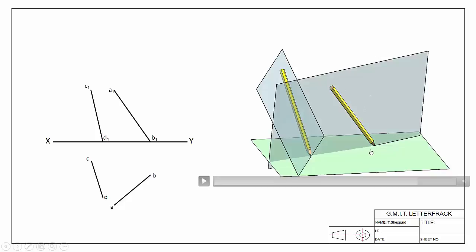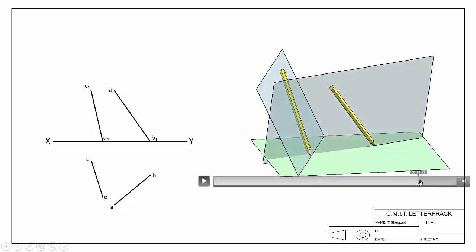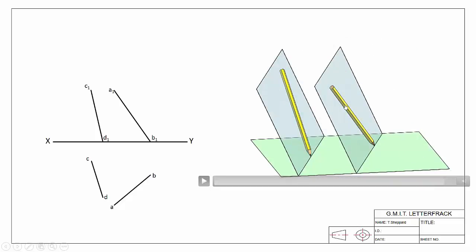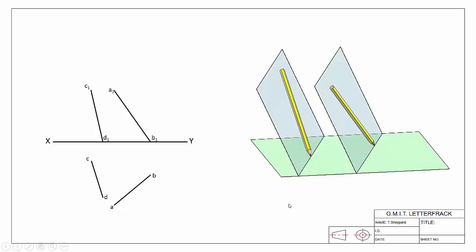So there's only one possible position that our plane can be in where it's able to contain this line and then, when moved across, contain the other. That's what we mean when we say the two skew lines constrain these two parallel planes — they fix it. There's only one that can actually meet that constraint.